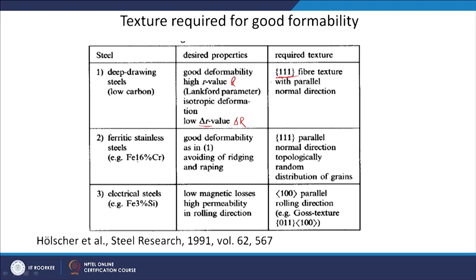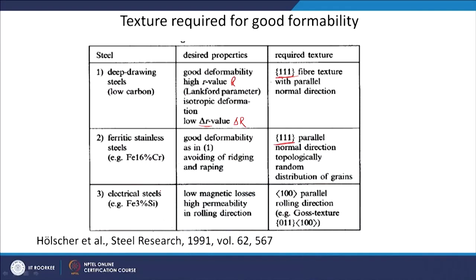In ferritic stainless steel with Fe 16% chromium, the requirement is good deformability, again with 111 parallel to the normal direction and a topologically random distribution of grains. You again need a 111 fiber direction, which is the gamma fiber, as discussed in the previous lecture. For electrical steel, the purpose is different — the purpose is not formability but to reduce hysteresis losses.